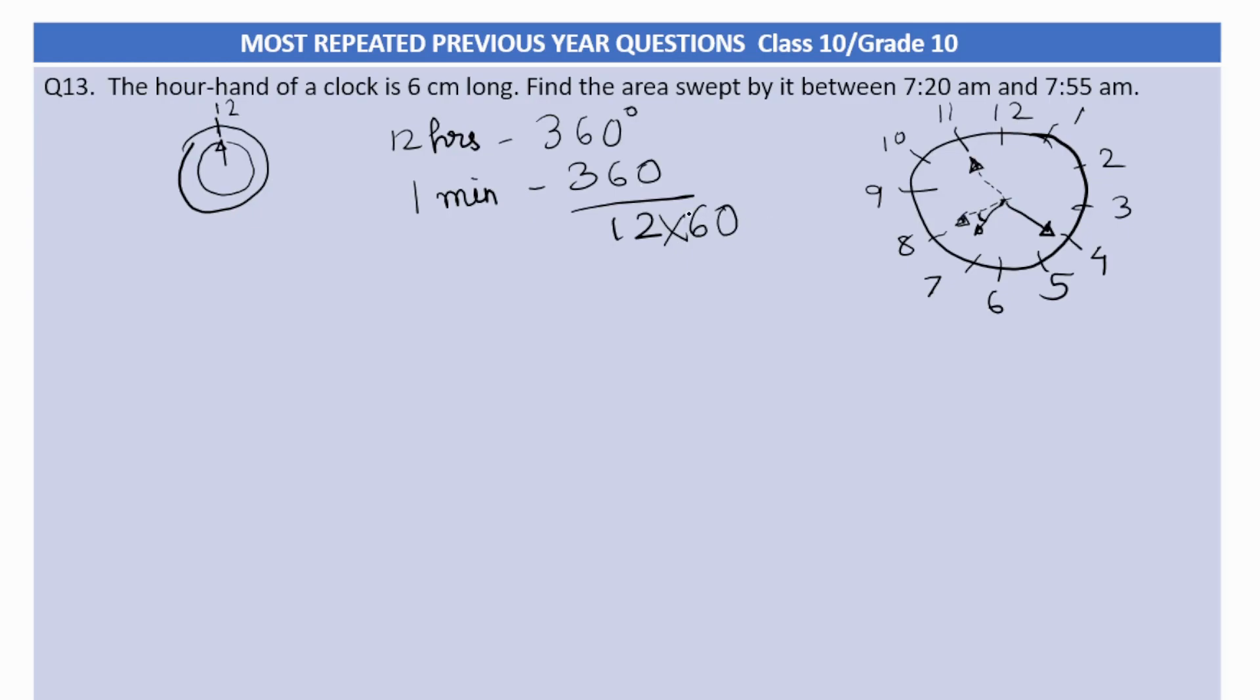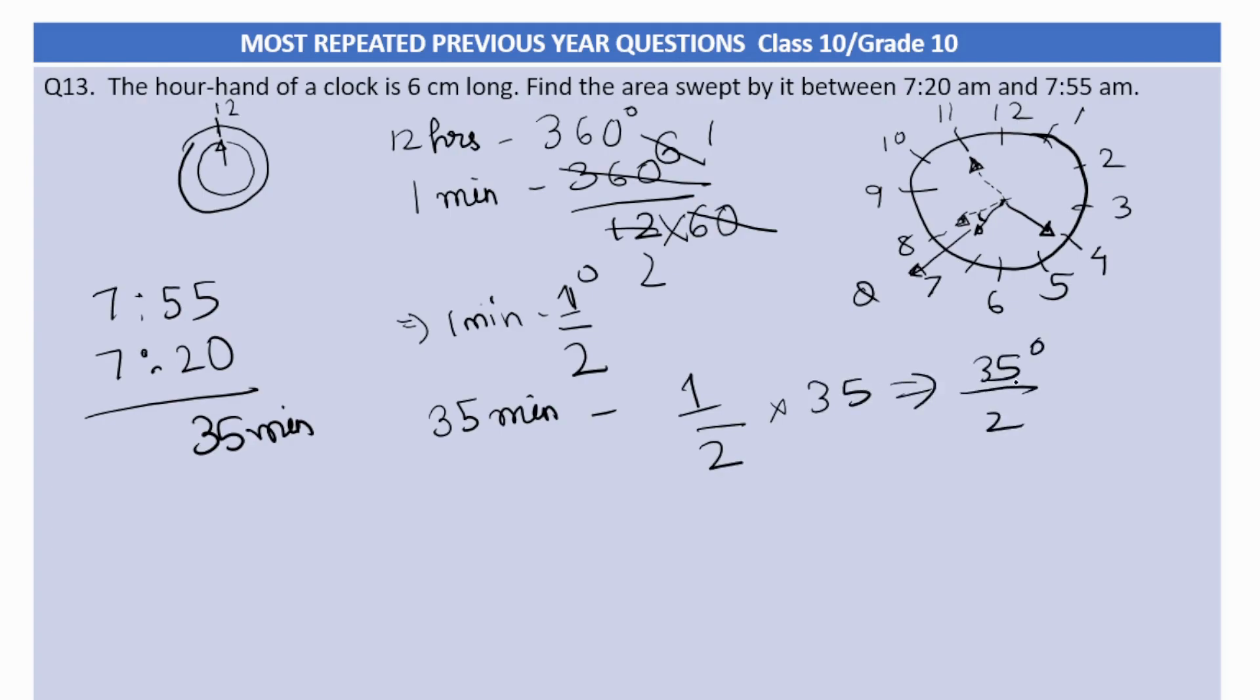For one minute it moves only half a degree because hour hand moves very slowly. So it is correct that half a degree only it will move for one minute. Now for 35 minutes, where did the 35 come from? We subtracted 7:55 from 7:20. So for 35 minutes, this angle theta will be half into 35, which is 35 by 2 degrees.